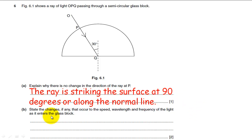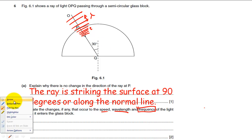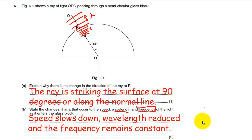State the changes, if any, that occur to the speed, wavelength, and frequency of the light as it enters the glass block. This question takes us back to the ripple tank. If you think about light as a wave, you can imagine the ripples coming in like this, and as they get into the medium where they move slower, they squish up closer together and they slow down. The wavelength gets smaller, the speed slows down. If you were standing here counting how many waves per second you got, when they slow down but they get closer together, you get the same number per second. The frequency stays the same. The speed slows down, the wavelength is reduced, but the frequency remains constant.